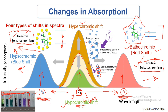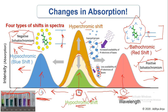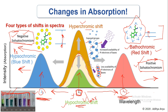So to summarize, there are four different kinds of changes in absorption: hyperchromic and hypochromic shifts without change in lambda max; bathochromic shift towards the red side or higher wavelength; and hypsochromic or blue shift. There are also two associated terms — negative solvatochromism if increased polarity causes a blue shift, and positive solvatochromism if increased polarity causes a red shift. Thank you very much.